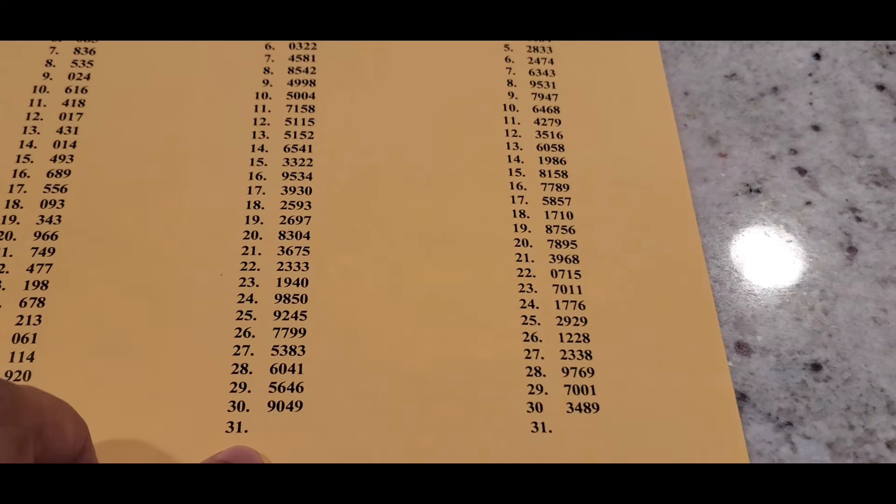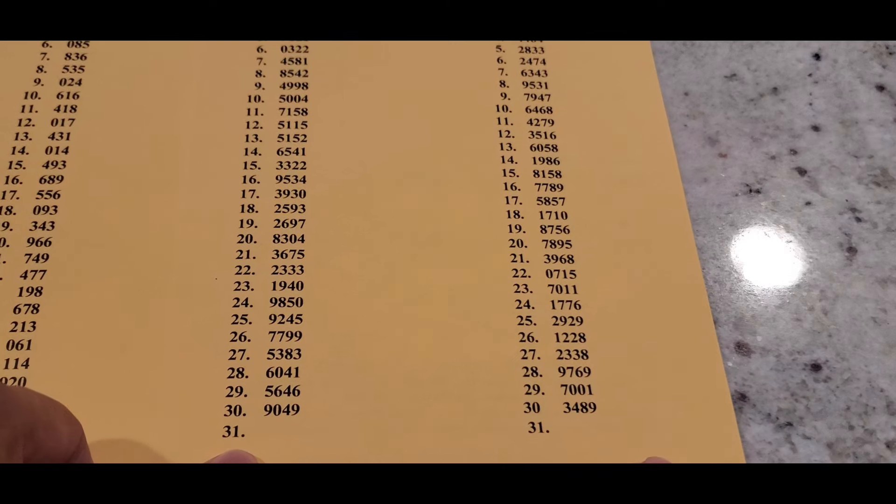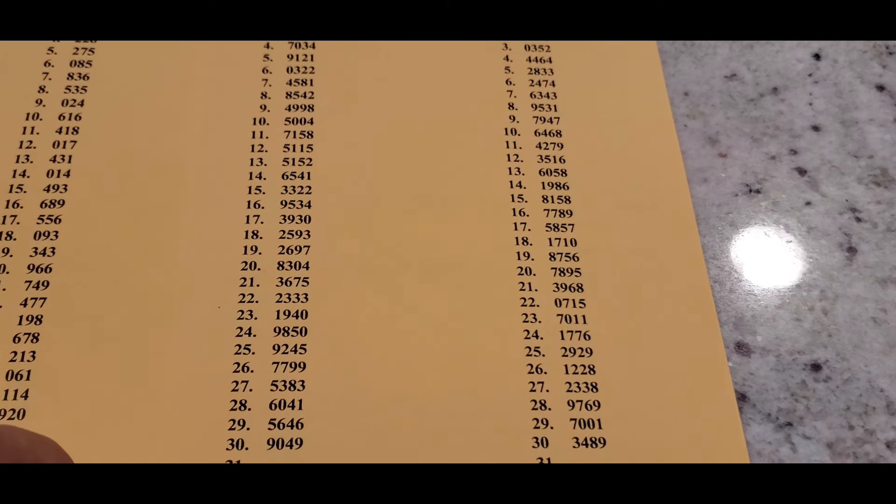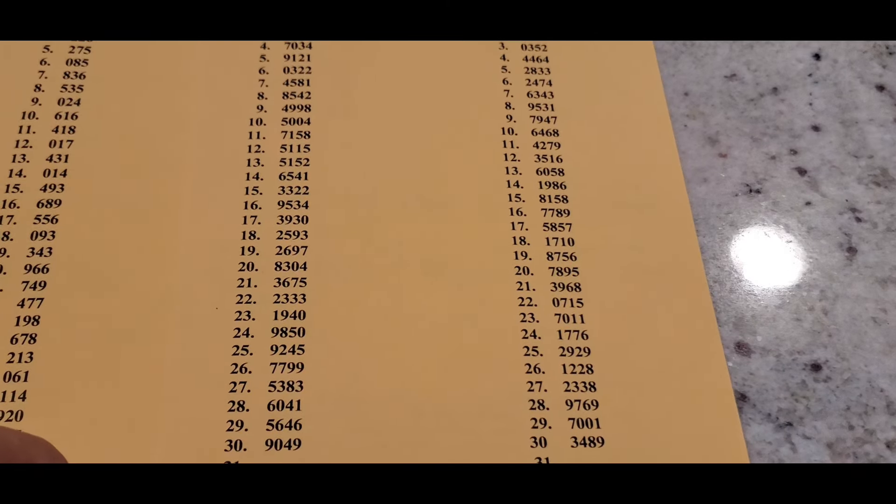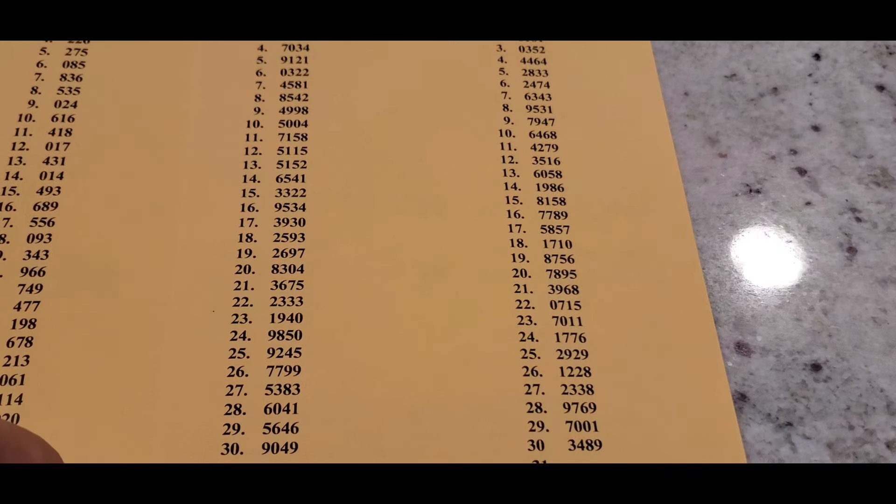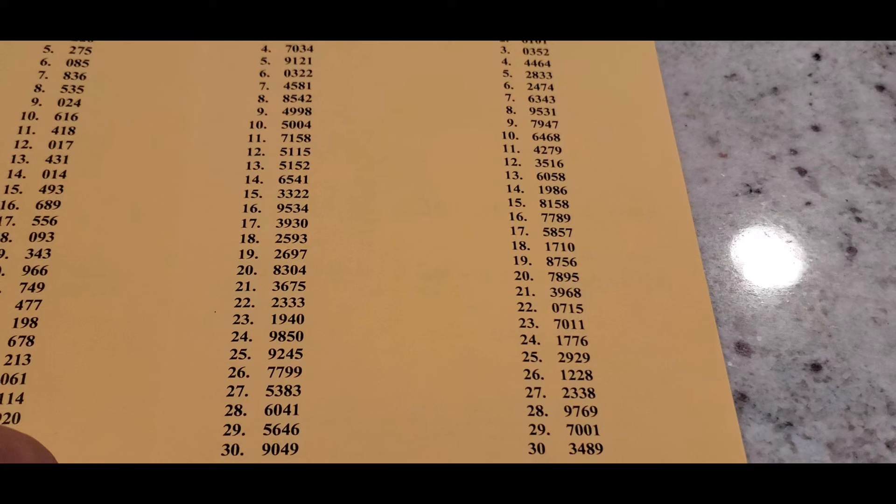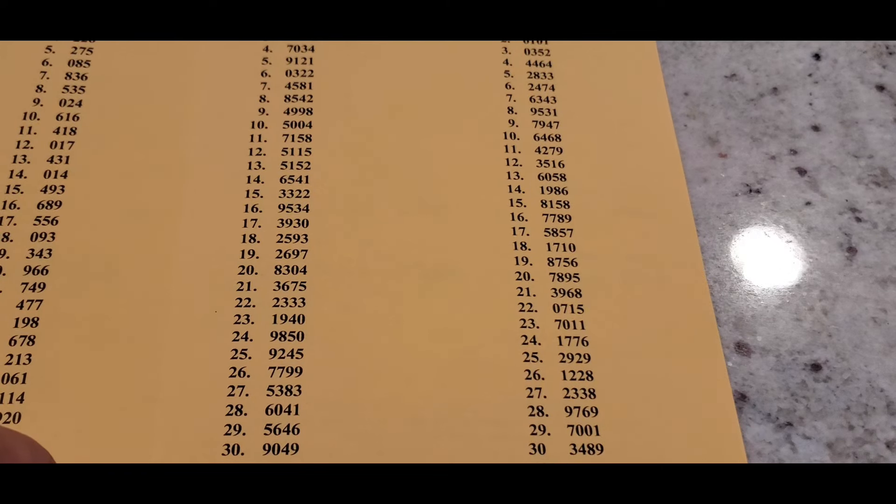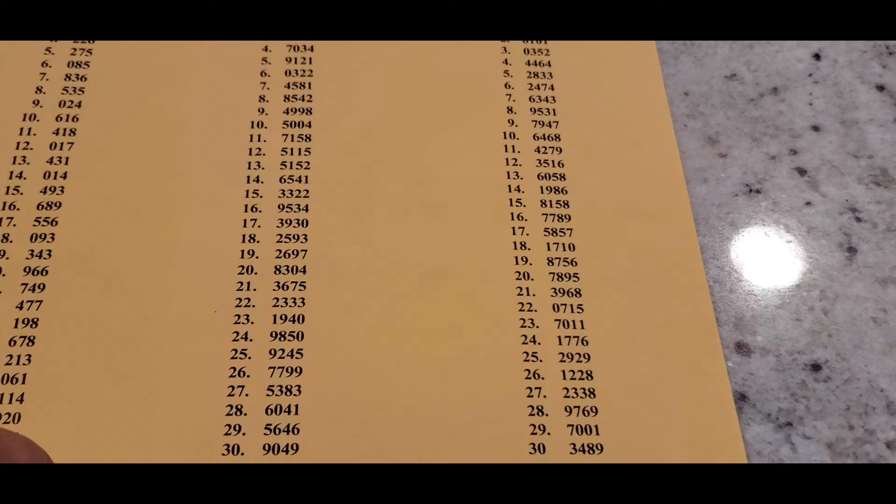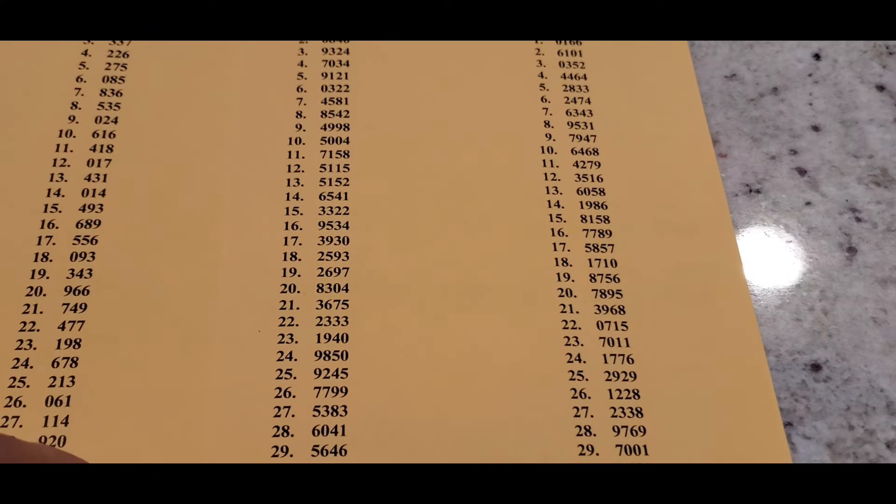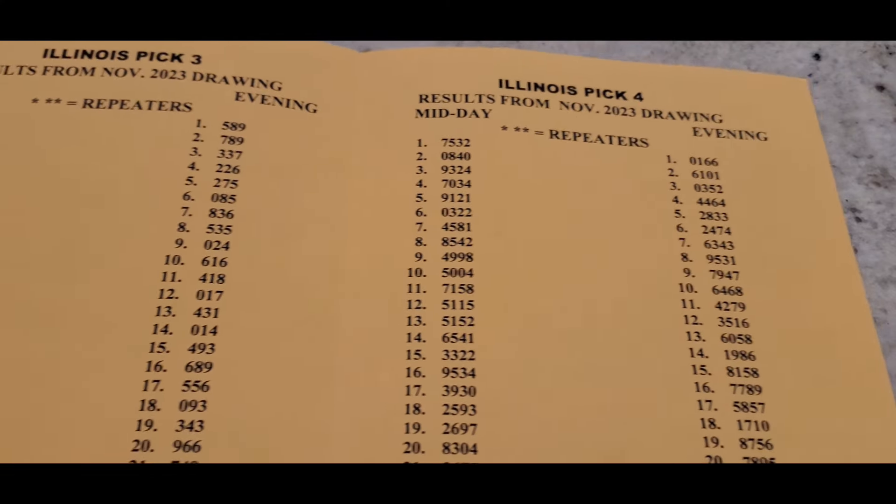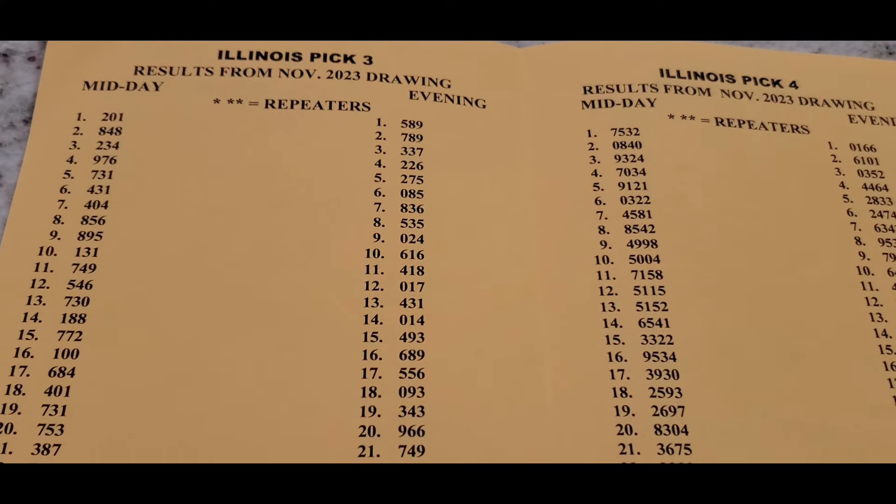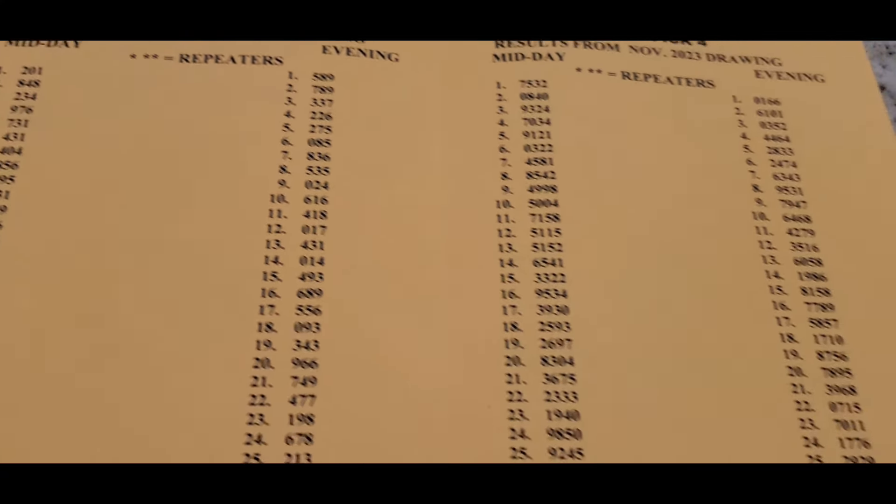And then you can see the last number for the last day is 9049 and 3489. So you can mix and match these. Some of these have also fell vice versa, evening fell in midday and midday fell in the evening. Some fell the day before or the day after, so they're accurate, but you do have to watch it to kind of make sure. So these are the numbers for pick four for the Illinois lottery, and over here is the pick three for the whole month.